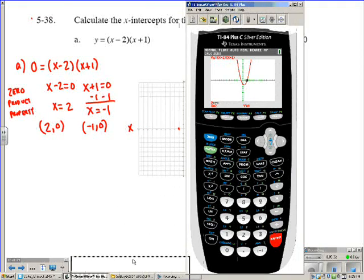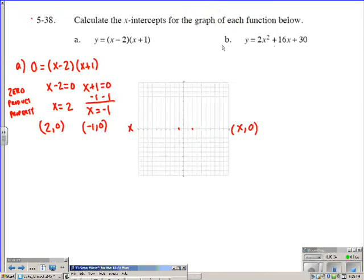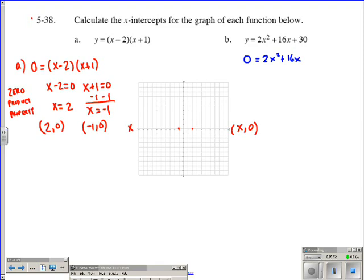All right. Let's jump back into the second one. y equals 2x squared plus 16x plus 30. So first things first, we're looking for the x-intercepts. We need to put 0 in for our y. So we have 0 is equal to 2x squared plus 16x plus 30. Now, as we look at this one here, we want to end up solving this. So first thing we want to check is, does it factor?